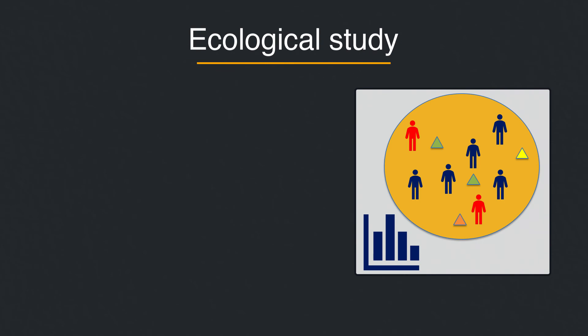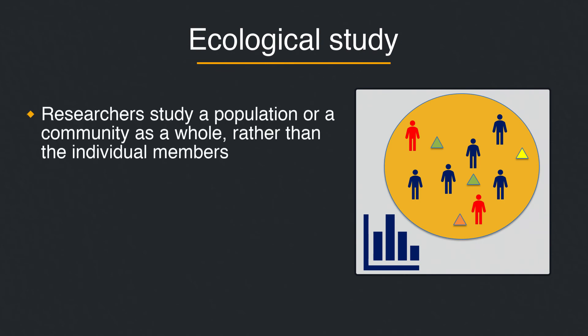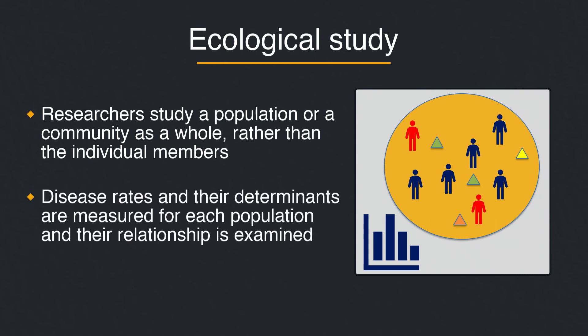In an ecological study, researchers study a population or a community as a whole, rather than the individual members. In this case, disease rates and their determinants are measured for each population or community, and their relationship is examined. Populations can be defined in several ways, for example geographically. You can find more information on research literacy on our website, Understanding Research. This initiative is a work in progress, and we want to hear from you. Thank you for watching.